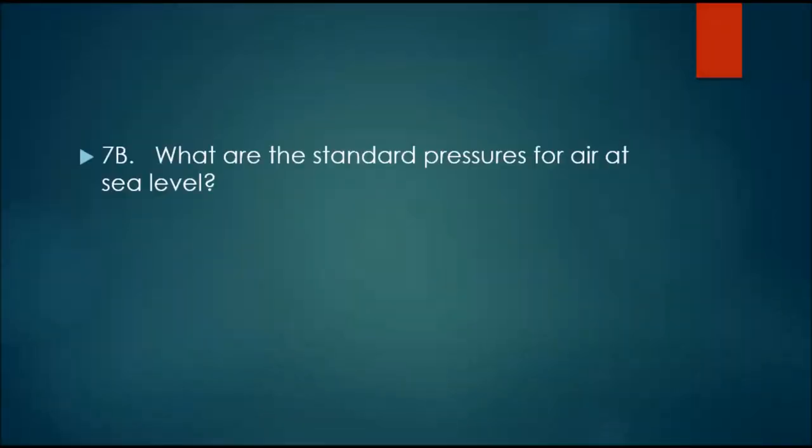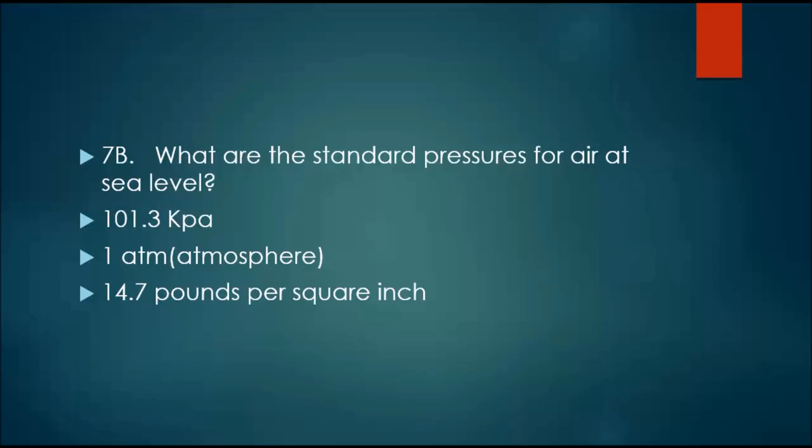Why did mercury eventually replace water barometers? Because mercury doesn't move up and down that much. It's a whole lot more dense. Before we go on, let's go through the different numerical values for standard pressure. That's 101.3 kilopascals, one atmosphere, 14.7 pounds per square inch. That's the same thing as PSI, and that is what is used for tire pressure. 760 millimeters of mercury, or Torr, and Torr is named after the guy who invented barometers, Torricelli.